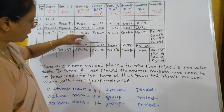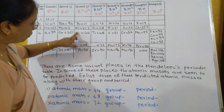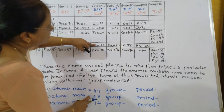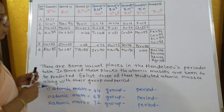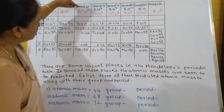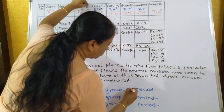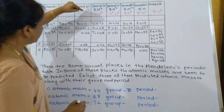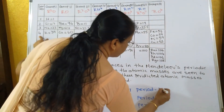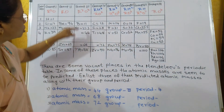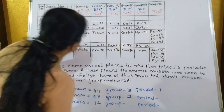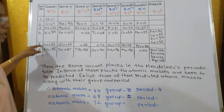One element has a predicted atomic mass of 44, the next is 68, and the next is 72. For atomic mass 44, it comes under group 3 and period 4. For atomic mass 68, it comes under group 3 and period 5. There are many predicted elements; you can write any three of them.